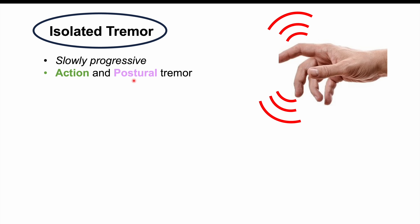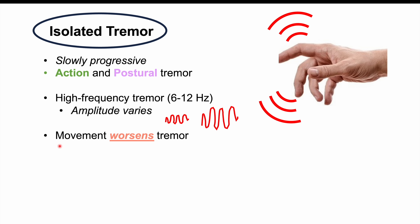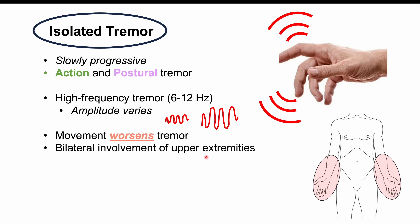In some cases, if there is an action or postural tremor and the hands are then placed at rest, tremor can still occur. This tremor is a high-frequency tremor occurring at 6 to 12 hertz, though the amplitude varies. Because it is an action tremor, movement will often worsen it. The tremor is bilateral, with bilateral involvement of the upper extremities — both arms are affected — and it will be either symmetric or asymmetric.